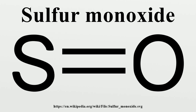Safety measures: Because of sulfur monoxide's rare occurrence in our atmosphere and poor stability, it is difficult to fully determine its hazards. But when condensed and compacted, it forms disulfur dioxide, which is relatively toxic and corrosive. This compound is also highly flammable and when burned produces sulfur dioxide, a poisonous gas.